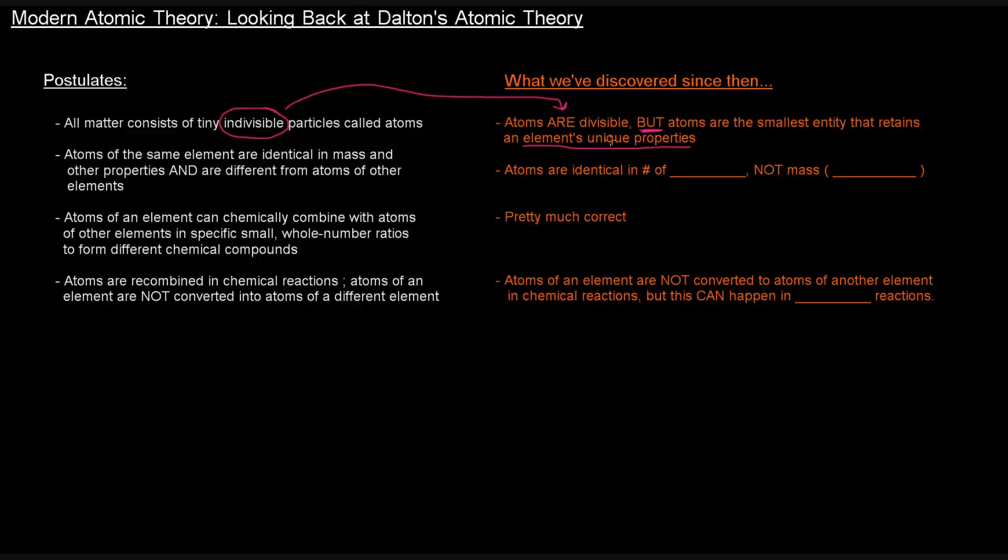So basically, an atom is the smallest thing that has unique properties. Like protons are protons regardless of which atom they're in. Electrons are the same way, neutrons are the same way. They don't differ from atom to atom.